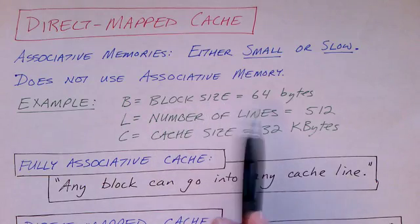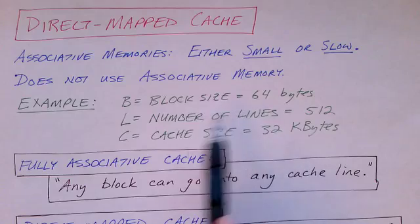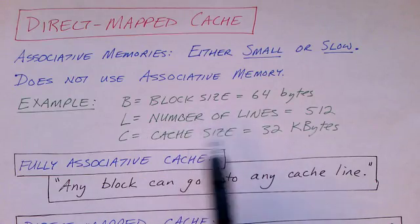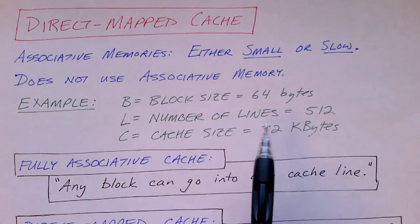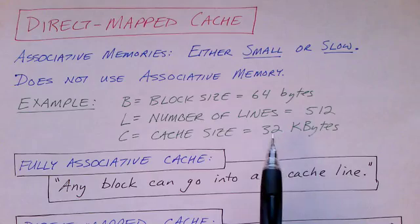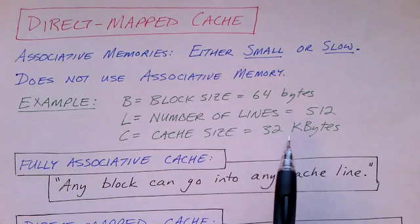We'll stick with our block size of 64 bytes, and in this cache we'll have 512 lines. So, if we multiply these together, we see that the cache size is 32 kilobytes.